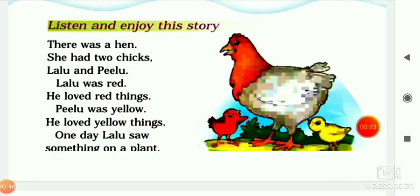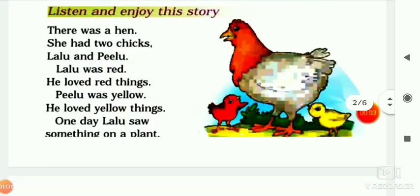Lalu was red. He loved red things. Jo Lalu tha, woh red tha aur usse laal chijayi pasand thi. Kyunki woh laal tha, isse laal chijayi pasand thi. Pillo was yellow. He loved yellow things. Aur jo Pillo tha, woh yellow tha. Isse peeli chijayi pasand thi.